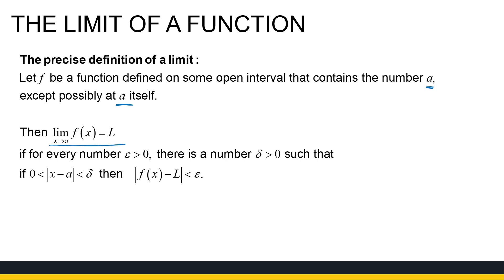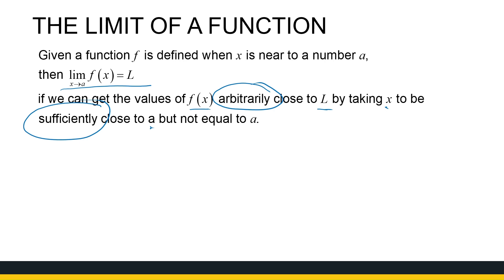If for every number epsilon greater than zero, there is a number delta greater than zero such that the following happens. This is where the arbitrarily close and sufficiently close comes from. Now I am quantifying that.